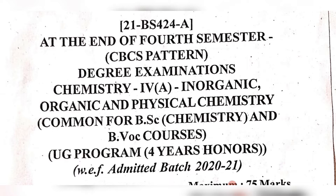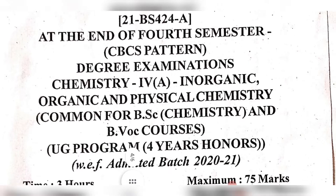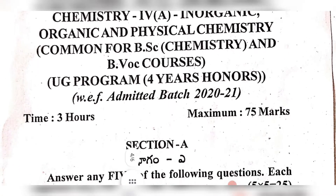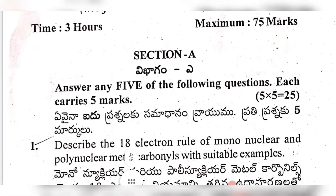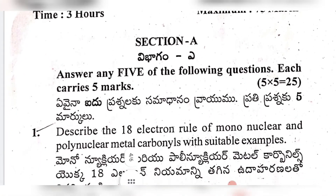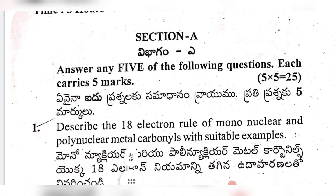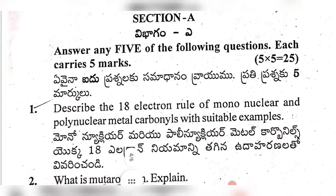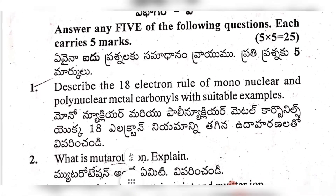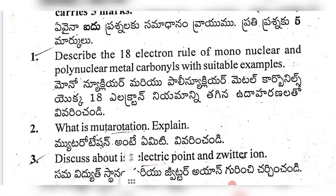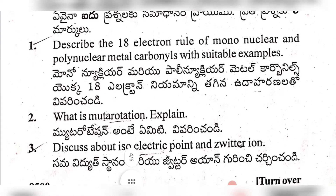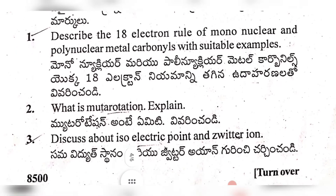As shown in the last video, first question: describe the 18 electron rule of mononuclear and polynuclear metal carbonyls with suitable examples. Second: what is mute rotation — explain. Third: discuss about isoelectric point and zwitterion.